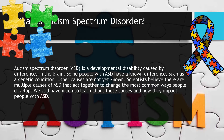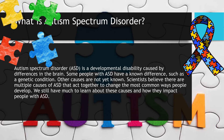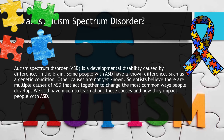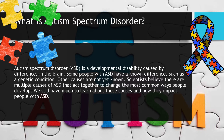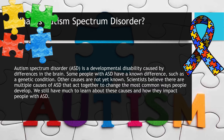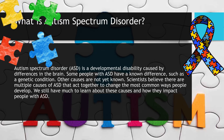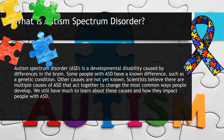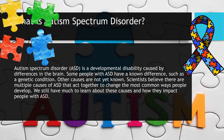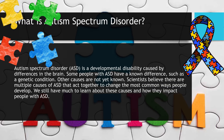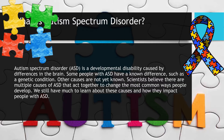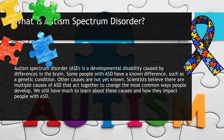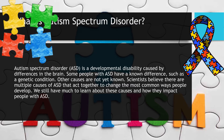People with ASD may behave, communicate, interact, and learn in ways that are different from most other people. There is often nothing about how they look that sets them apart from other people. The abilities of people with ASD can vary significantly. For example, some people with ASD may have advanced conversation skills, whereas others may be non-verbal. Some people with ASD need a lot of help in their daily lives, while others can work and live with little to no support. ASD begins before the age of 3 years and can last throughout a person's life, although symptoms may improve over time.